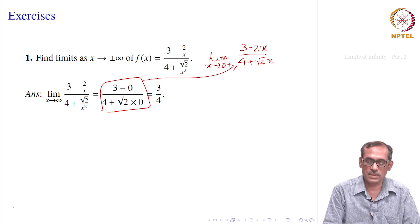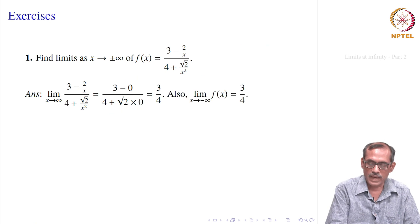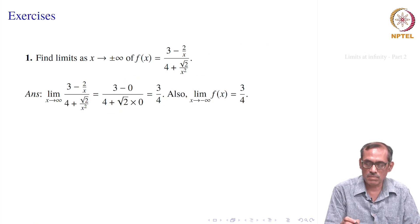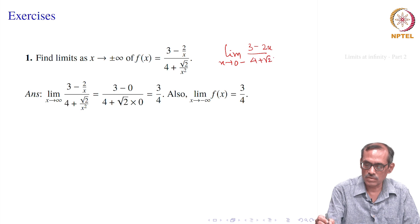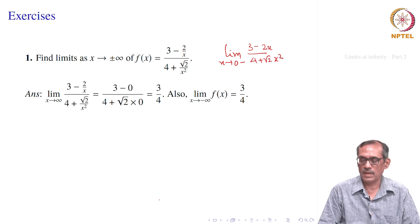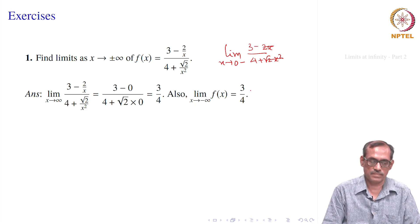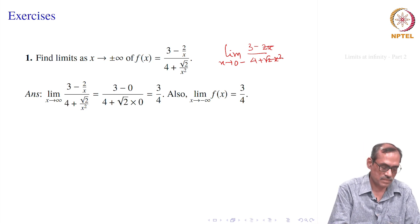What about x goes to minus infinity? Again, it is similar. x goes to minus infinity gives limit x goes to 0 minus of (3 minus 2x) divided by (4 plus root of 2x²). That also makes both terms 0, and you get 3/4. That is easy.